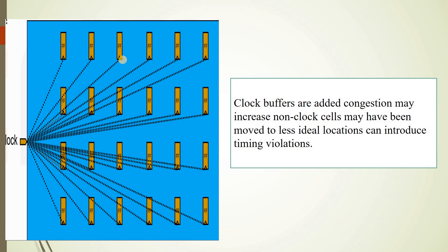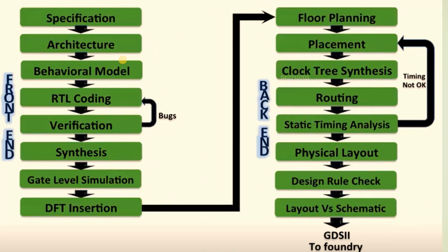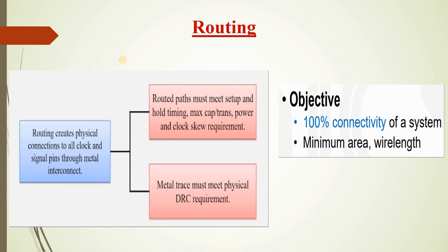The next step is routing. Routing creates physical connections to all clock and signal pins through metal interconnects. The main objectives of routing are 100% connectivity of the system and minimizing the area and wirelength. There are different types of routing: power routing — where VDD and VSS are routed — clock routing, and signal routing, where all the signal pins are connected.